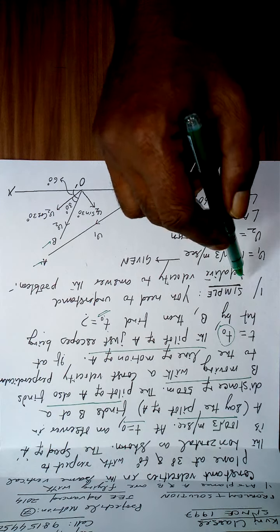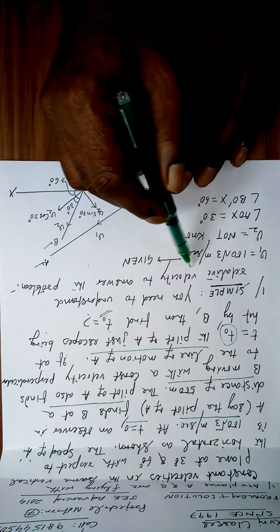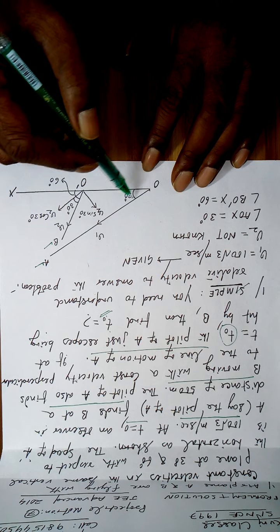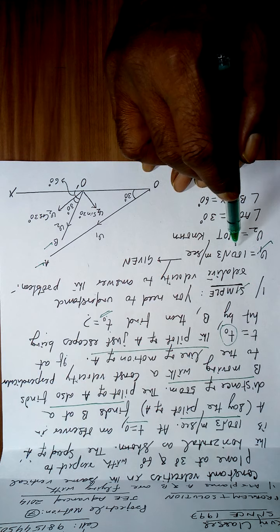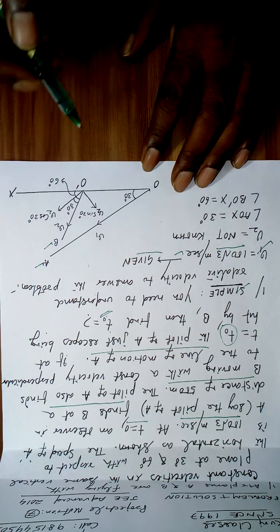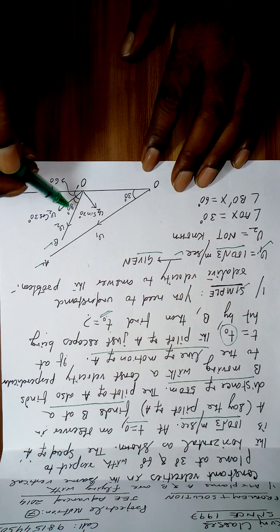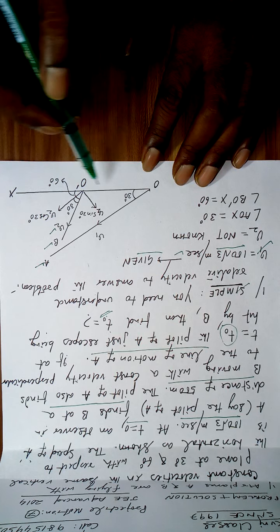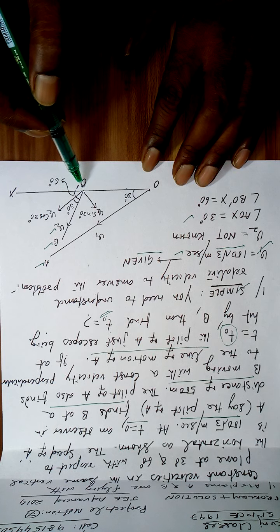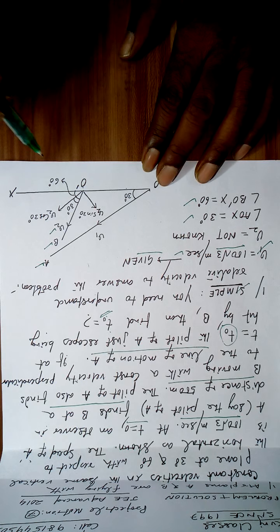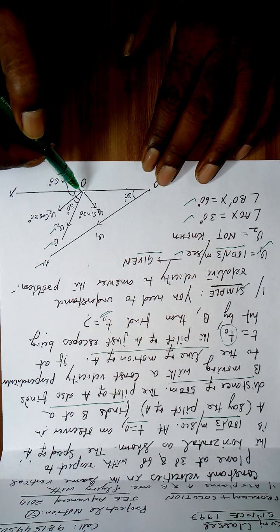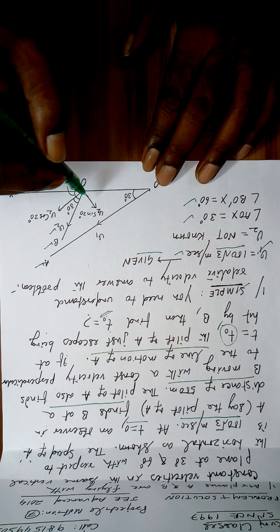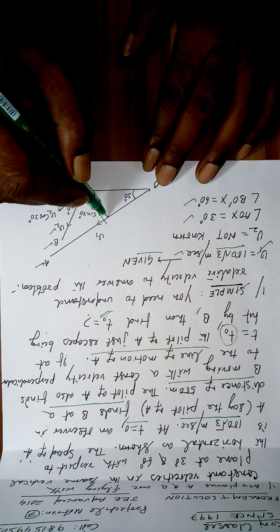The analysis is simple. You need to understand relative velocity to answer the problem. A is actually travelling along direction OA with velocity v1 = 100√3 m/s. B is travelling along OB with velocity v2, which is unknown. The angle AOx is 30 degrees and the angle BOx is 60 degrees. A finds B is moving perpendicular to A — that is, this angle is 90 degrees.